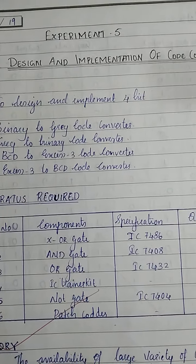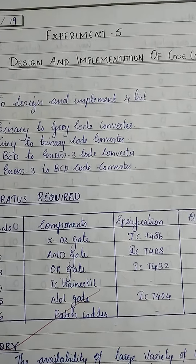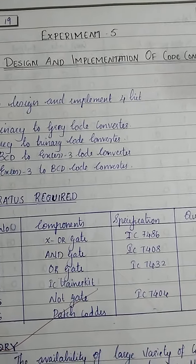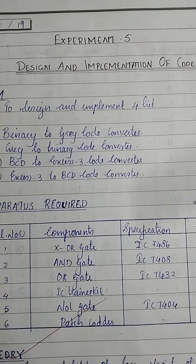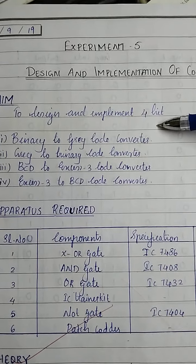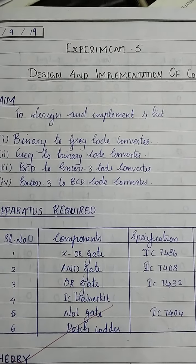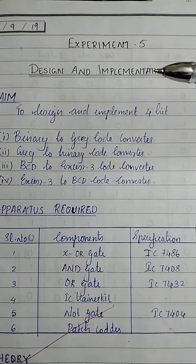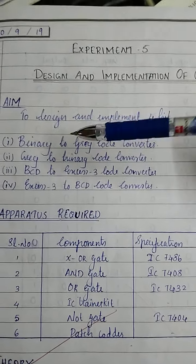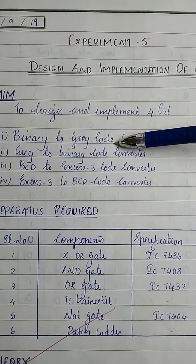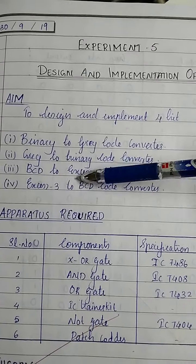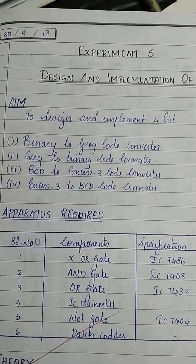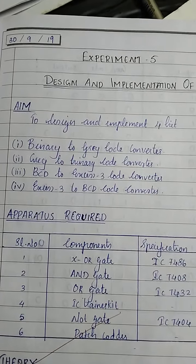Next topic: Code Converter. We will explain how to solve code converters. We will cover different code converters: Binary to Gray Code Converter and logic circuit. We will implement Binary to Gray Code Converter, as well as Gray to Binary, BCD to Excess-3, and Excess-3 to BCD. Binary, Gray, Excess-3, and BCD are all codes. So, let's convert here.